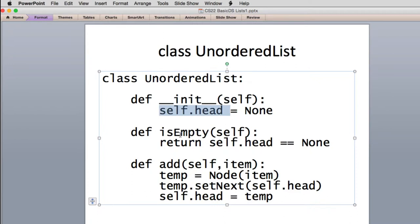We're going to have isEmpty, which will check if the list is empty. It just checks if the head is equal to none. That means there's no items on the list. So it just returns the result of this comparison, true or false.